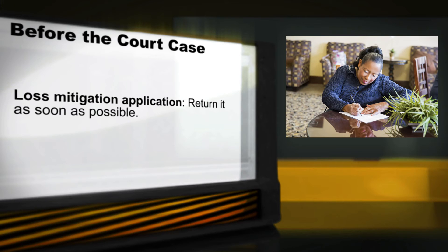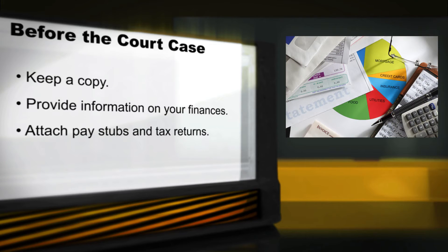The lender must also include a loss mitigation application with your notice. Remember, loss mitigation refers to ways you may avoid having your home go to foreclosure. Complete the application and return it as soon as possible. Do not put it off or delay returning it. Be sure to keep a copy of the application for your records along with the date that you returned it to the lender or servicer. On the application, you will provide information about your finances. You may have to attach documents like your pay stub and tax returns. You will also get a chance to explain why you were in default.